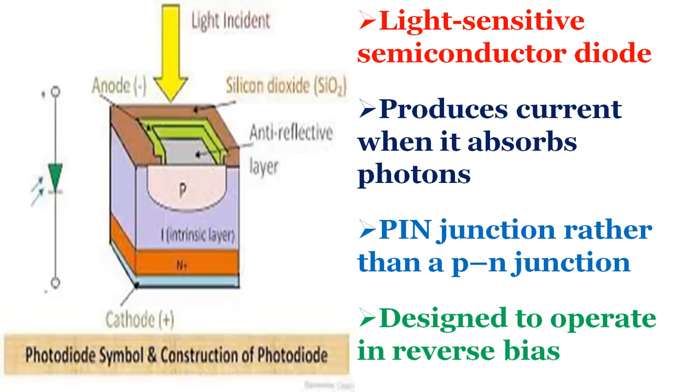Photodiodes usually have a slower response time as their surface area increases. The photodiode is designed to operate in reverse bias mode. The solar cell used to generate electric power is a large area photodiode.